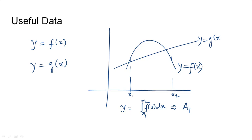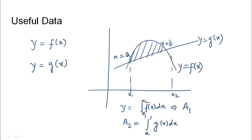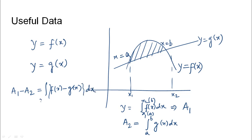Assuming a second function y equals g(x) cuts the first function at two points a and b, which are the x-coordinates, the area under the second function would be the integration of g(x) dx between a and b. Subtracting A1 minus A2 gives the integration of f(x) minus g(x) dx between x1 equals a and x2 equals b, which yields the area bounded between the two curves.